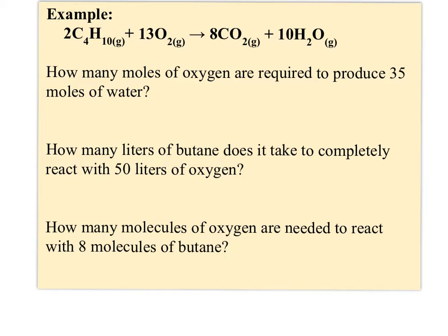For example, I've got a balanced equation showing that two moles of butane will combine with 13 moles of oxygen to produce eight moles of carbon dioxide and 10 moles of water. All four substances are gases, so this also tells me I have two liters of butane combining with 13 liters of oxygen to give me eight liters of CO2 and 10 liters of water. We have all kinds of conversion factors available here.